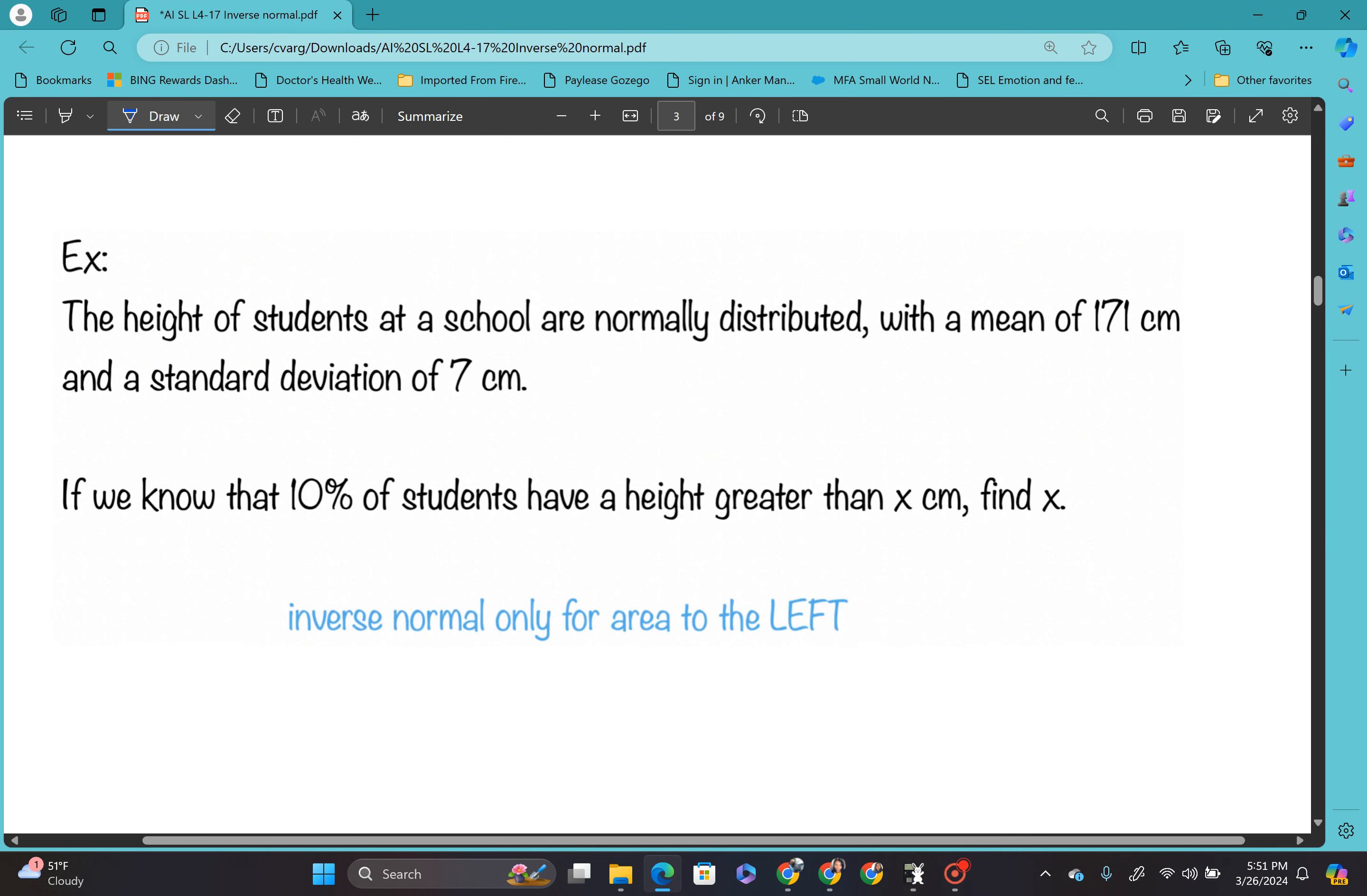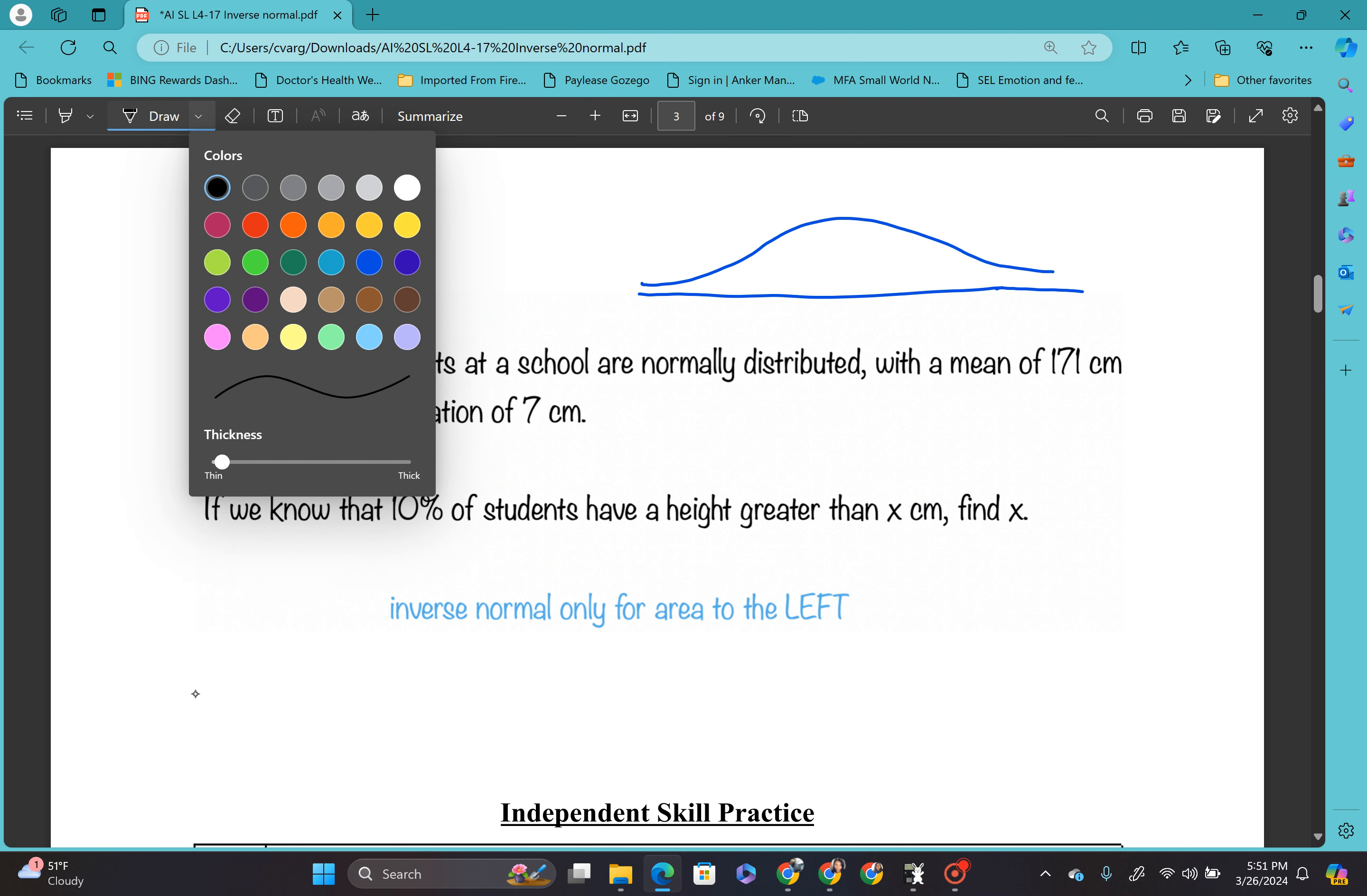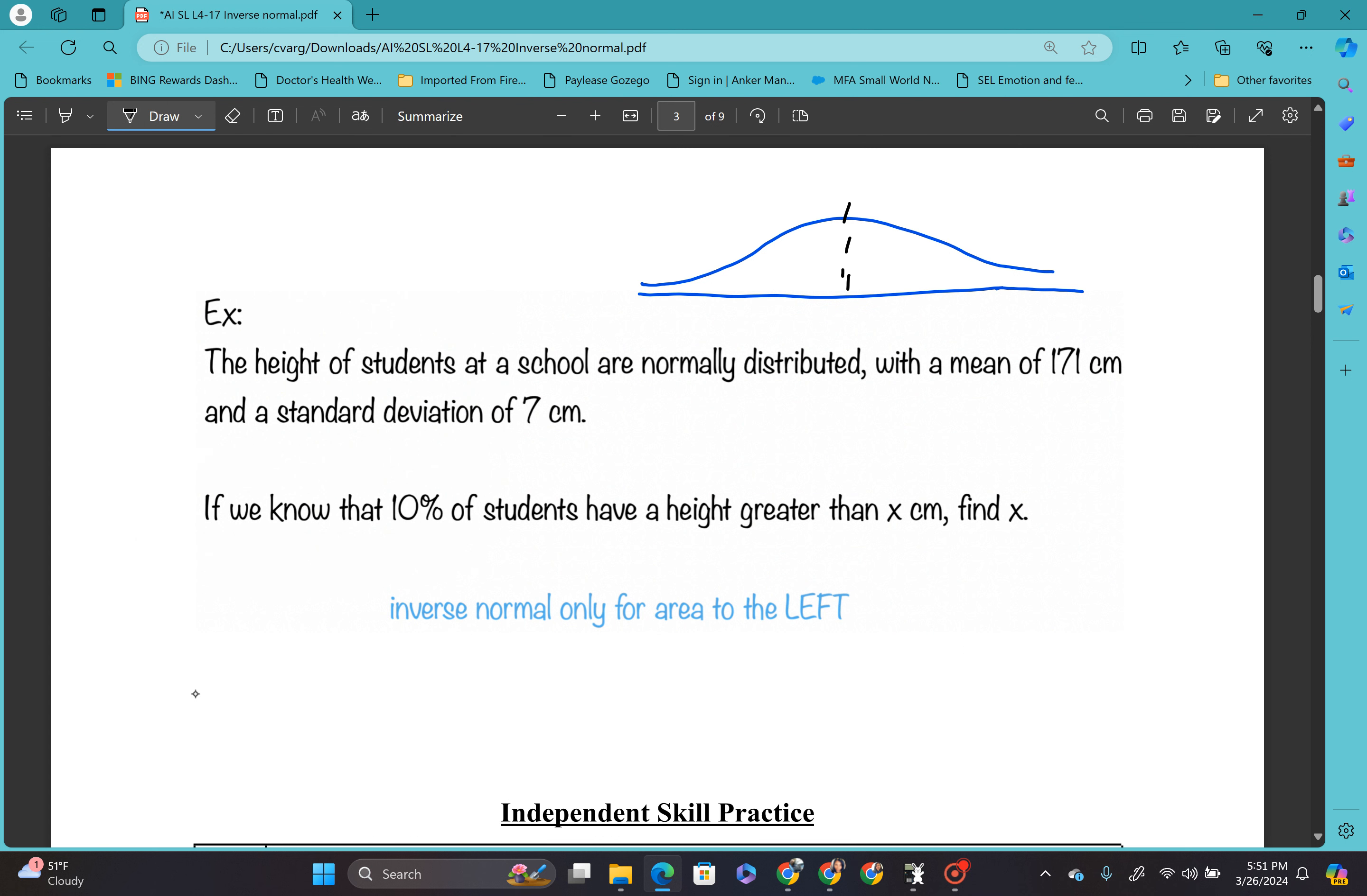So let's do a problem right here. The height of students at a school are normally distributed. As soon as you see that, you're going to go ahead and draw your normal curve. Not too bad. All right. And it says with the mean of 171. So as soon as we see that, we're going to go right down the middle and we're going to put 171 right there.